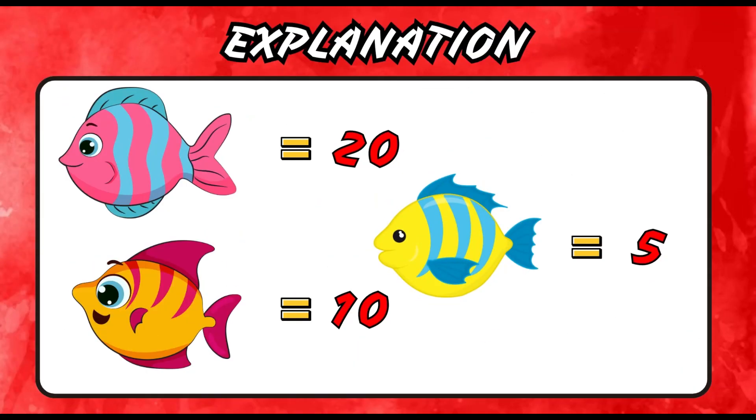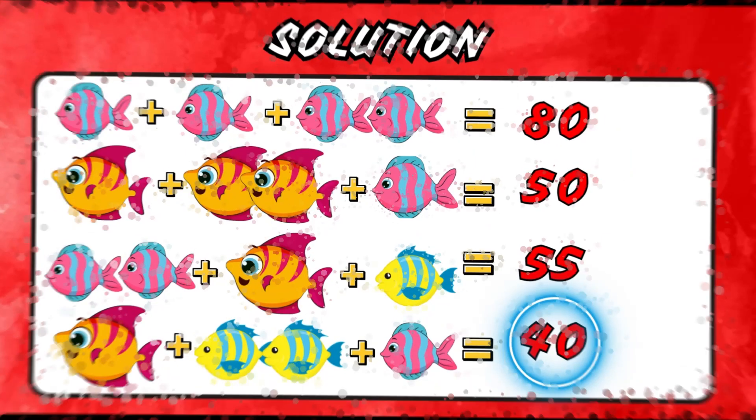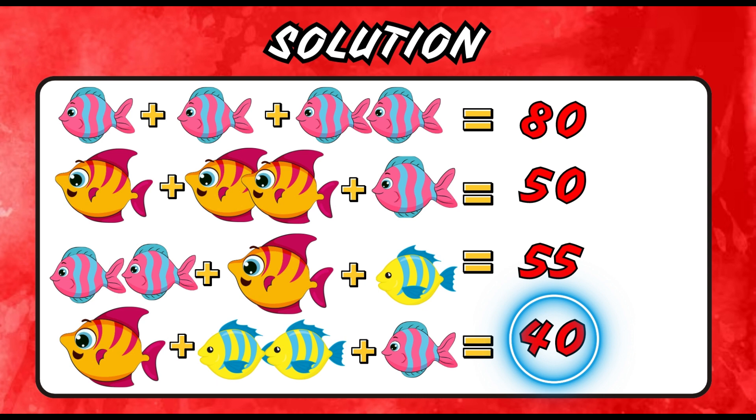Time is over. You're almost right. The value of the red and orange striped fish is 10, that of the blue and pink striped fish is 20, and the blue and yellow striped fish is 5. By doing so, you get the final answer of 40. If you got that right, comment down below.